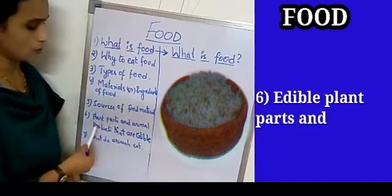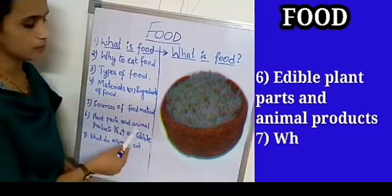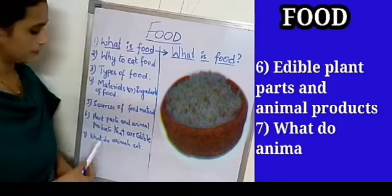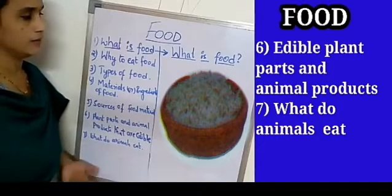It is plant parts and animal products that are edible. Edible means eatable. What do animals eat? We shall know about all these points in detail.